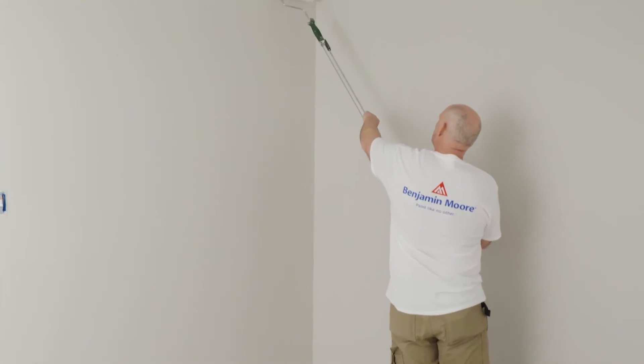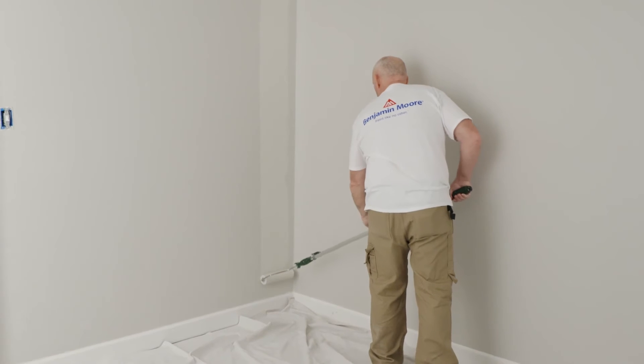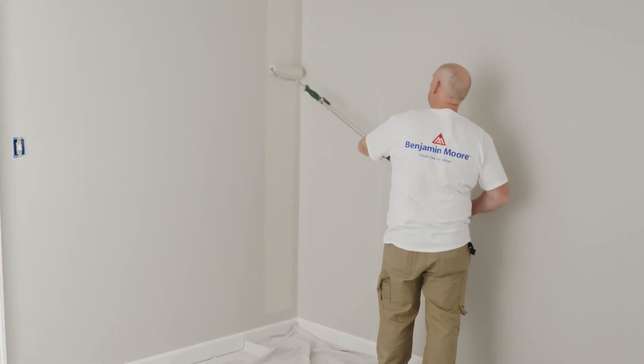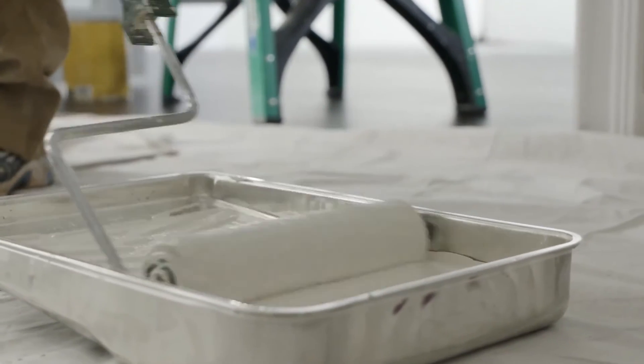The use of an extension pole will allow you to paint ceiling to floor in one single roller pass. Keep your roller loaded with paint and after you reload it, start from an unpainted area and work into the wet area.